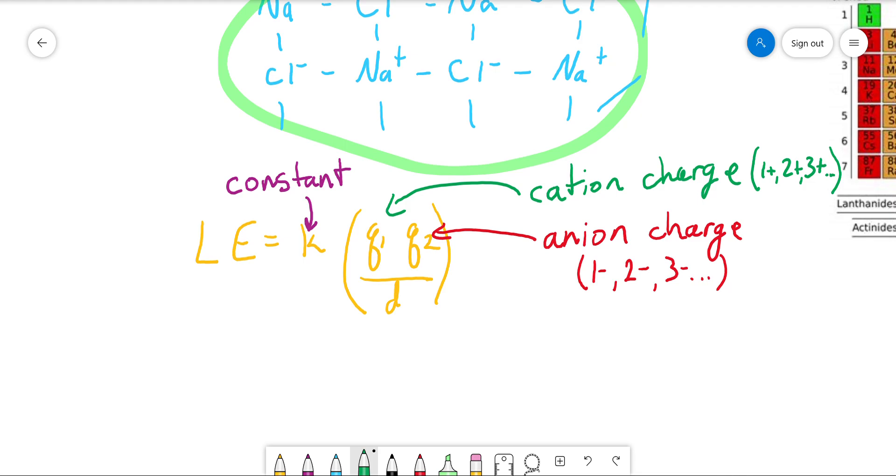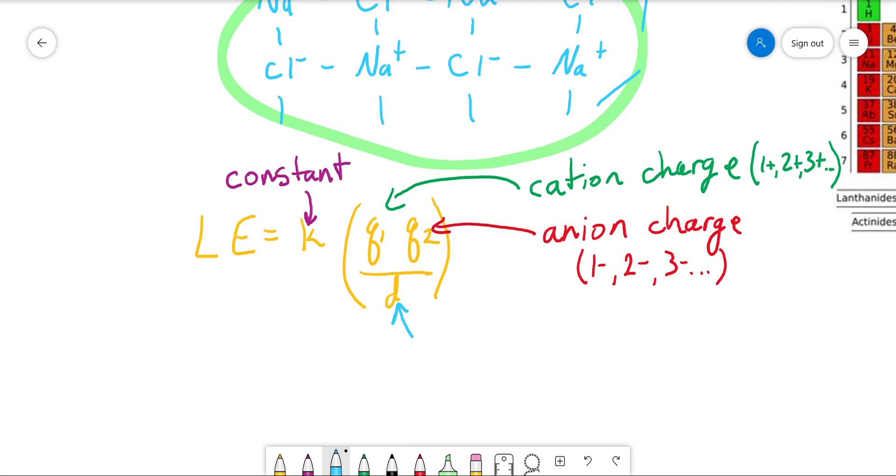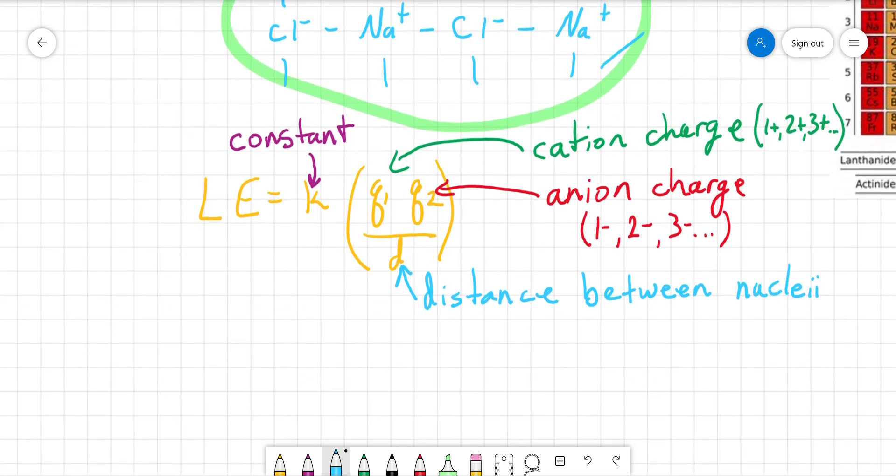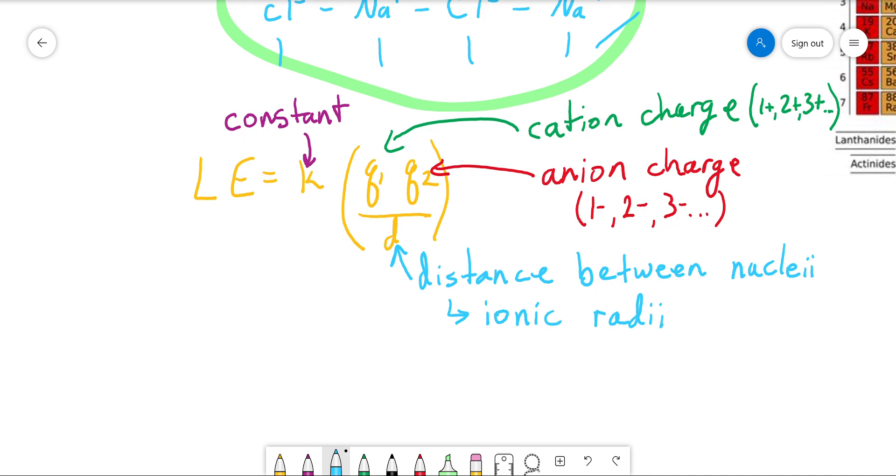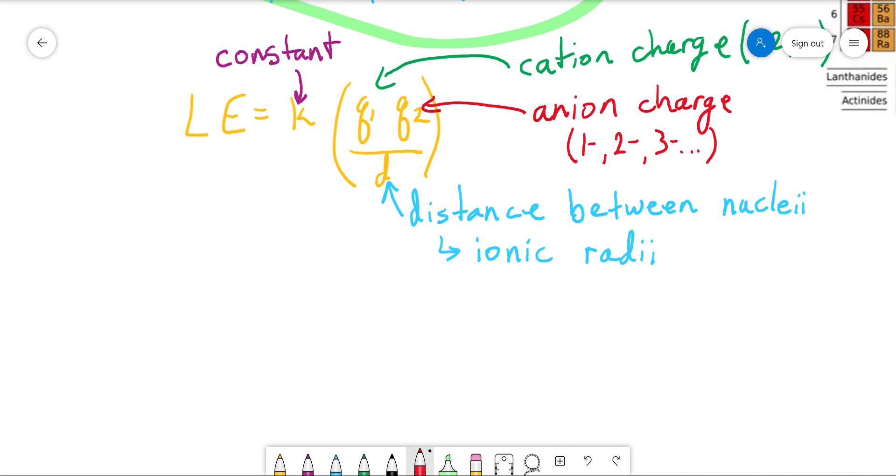And then finally on the bottom we have d. And that's the distance between the nuclei. So in other words, that's how far apart, in this instance, the sodium and the chloride are. So what does a lattice energy depend largely on? Well, it depends on the charge and it depends on the distance between them. In other words, when we say distance, what are we really talking about? Well, this is ionic radii. But I'll tell you one little secret about this, and that is that charge is always more important than radius.